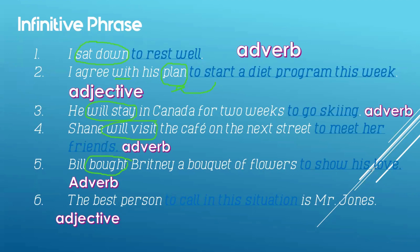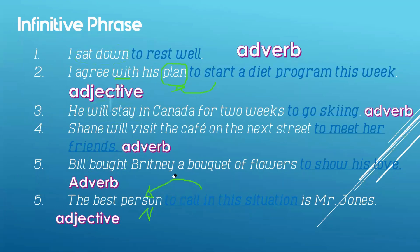Number six: 'The best person to call in this situation is Mr. Jones.' The phrase 'to call in this situation' refers to the subject 'person,' which is a noun. Remember, your subject is always a noun or a pronoun. What kind of person? To call in this situation. Which person? To call in this situation. Therefore, it is an adjective because it describes the subject 'person.' I hope you can identify the infinitive phrase whether it is an adverb or an adjective.